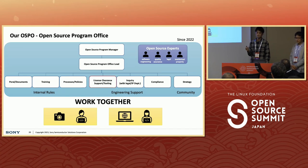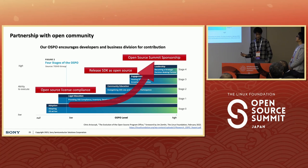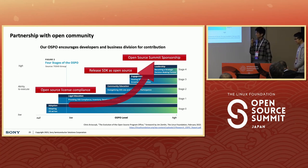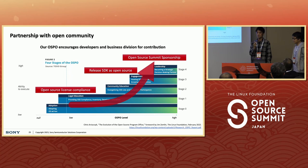Can you go back to the slide with the OSPO maturity level? On stage four, you have the Open Source Summit sponsorship. Do you also encourage internal developers to contribute back to the community, or do you just give money to events? Yes, we really encourage developers to contribute back to each OSS community, and we are thinking about some kind of contribution back to the OSS community. We especially have interest in the AI domain, and internally we have some discussion about contribution to the OSS community with developers.